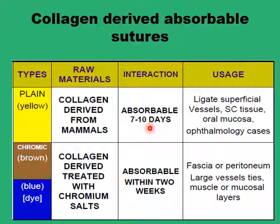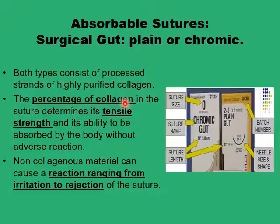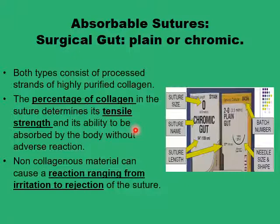If they are treated with chromic salts, they can stay longer and also retain most of their tensile strength for longer periods, up to two weeks or so. So they can be used for larger blood vessels and also for tissues like muscles or mucosal layers. It's the percentage of collagen in the suture that determines its physical properties, tensile strength, and rate of absorption for both the plain and the chromic-treated gut sutures. But both produce a local reaction in the tissue, ranging from mild irritation to extrusion and rejection of the whole suture if the inflammatory process is intense.